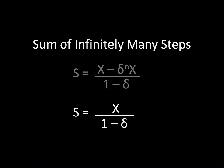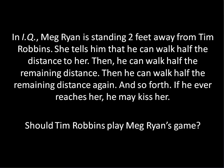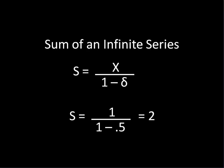Which means discount to the n times x is actually 0 in the limit. And thus, after all that work, we arrive at a fairly simple answer. The sum of an infinite geometric series is the first value divided by 1 minus the common ratio. If you go back to our original question, x equals 1, and discount is 1 half. And if you plug that into here, you actually get 2. Therefore, Tim Robbins will eventually reach Meg Ryan, and he'll get that kiss.